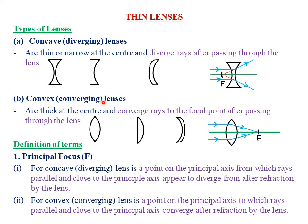We have what we call the convex lens, also called converging lens. They are called converging lenses because they converge or focus the rays of light to a common point. Convex lenses are usually thick at the center, and they converge rays to the focal point after passing through the lens. When you combine two convex lenses together, they form what we call a bi-convex lens. If one side is plane or straight while the other side is curved, it forms what we call a plano-convex lens. Upon reaching this particular lens, incident rays are actually converged to a common point, hence the word converging lens.